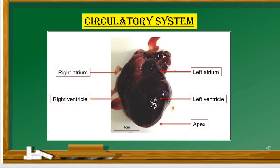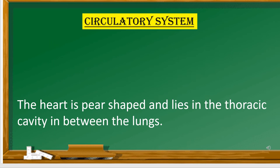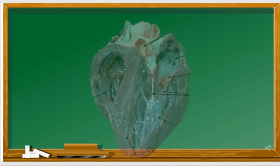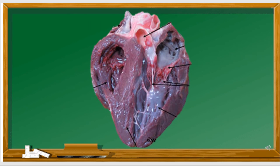The circulatory system is formed of blood, blood vessels, and the heart. The heart is spear-shaped and lies in the thoracic cavity between the lungs. The rabbit's heart is enclosed by a double-layered membrane called the pericardium. It is four-chambered, with two auricles and two ventricles.